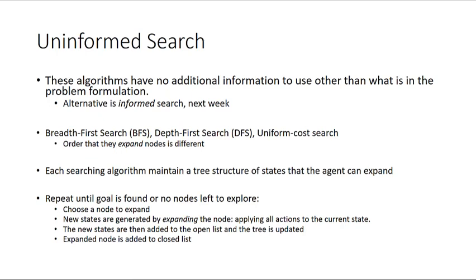All of these algorithms are going to maintain a tree structure of states as we search through the state space to find the goal. Each algorithm can be boiled down to a basic loop that we repeat until the goal is found or there are no nodes left to explore. We choose a node to expand, new states are generated by applying all actions to the current state, and that list of new states is added to the open list. The expanded node is then added to a closed list, and we check for the goal or continue on.